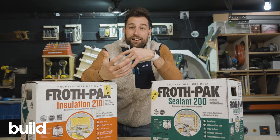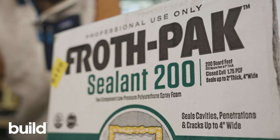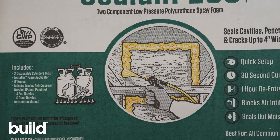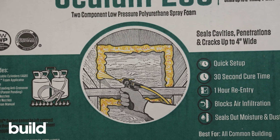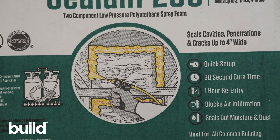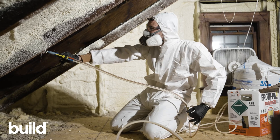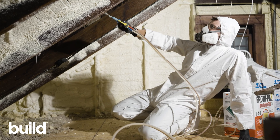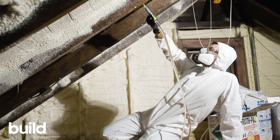Froth pack sealant is used for gaps and crevices. You'll typically see yourself picture framing a stud cavity or spraying over a gap in skip sheathing, for example. Whereas with the insulation product, you're actually going to fill the whole bay with probably at least two inches of material, and that's going to be your insulation.